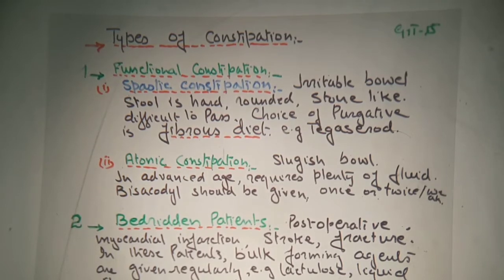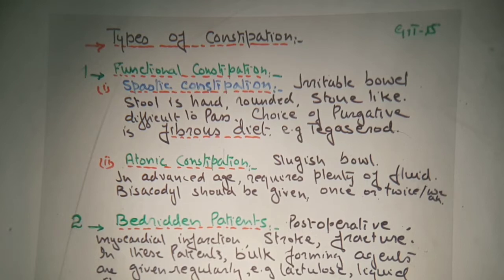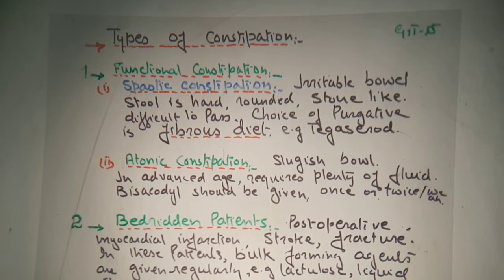Coming to the types of constipation. Number one is functional constipation, that is spastic constipation. When there is spasm arising in the muscles of the bowel, that is known as spastic constipation. It may cause an irritable bowel. The stool is hard, rounded, stone-like, because there is no softness. So the stool is very hard and difficult to pass — that is known as spastic constipation.